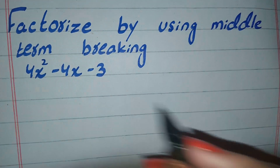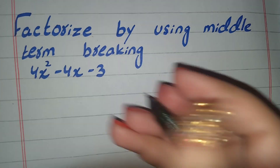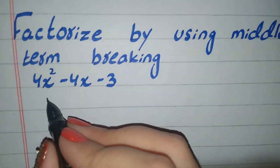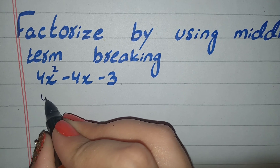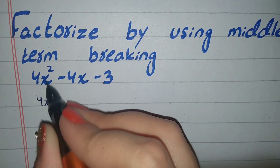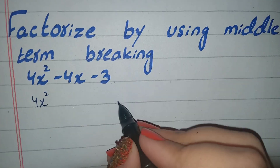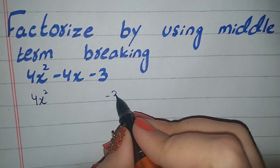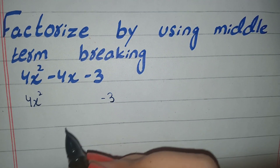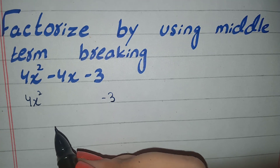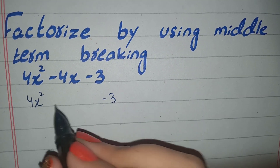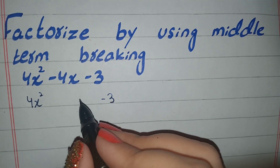For factorization, the rule is: first, write the first term and write the last term. Then we have to break the middle term — we have to make two terms like this.